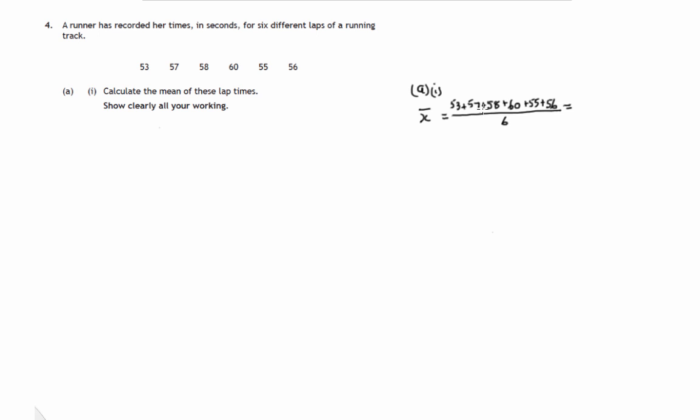So we can get our calculator out and do this, but let's kid on these are all 50s. 6 times 50 is 300. So how much above 50 is each of these? We've got 3 plus 7 is 10, plus 8 is 18, plus another 10 is 28, plus 5 is 33, plus 6 is 39. So it should come to 339.